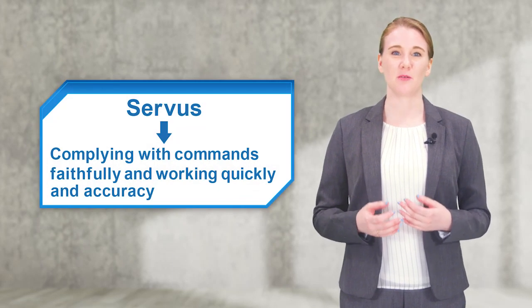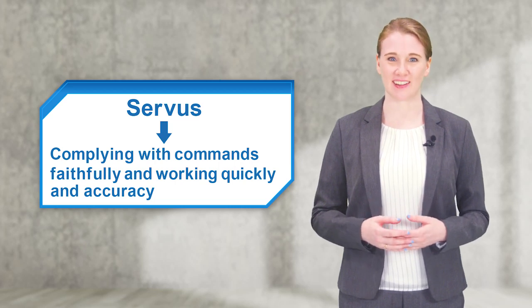Do you know what an AC servo is? Some of you may have heard the word before but are not really sure what it means. Some of you may have never even seen or heard this word before. An AC servo is a specialized device that is likely never seen in everyday life. The word servo is derived from the Latin word servus. Servus means to comply with commands faithfully, quickly, and accurately.